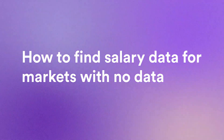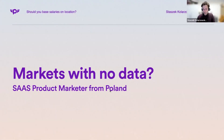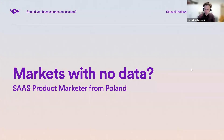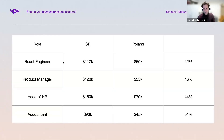Imagine you want to hire a very specific role in a different country — say, a product marketer from Poland. The issue is there aren't many product marketers in Poland, so it's impossible to find market data for a role that just doesn't exist. A small trick: find four or five roles where you have access to salaries in both markets. You look at the rates in San Francisco, then you look at the rates in Poland, and you see what the difference is.